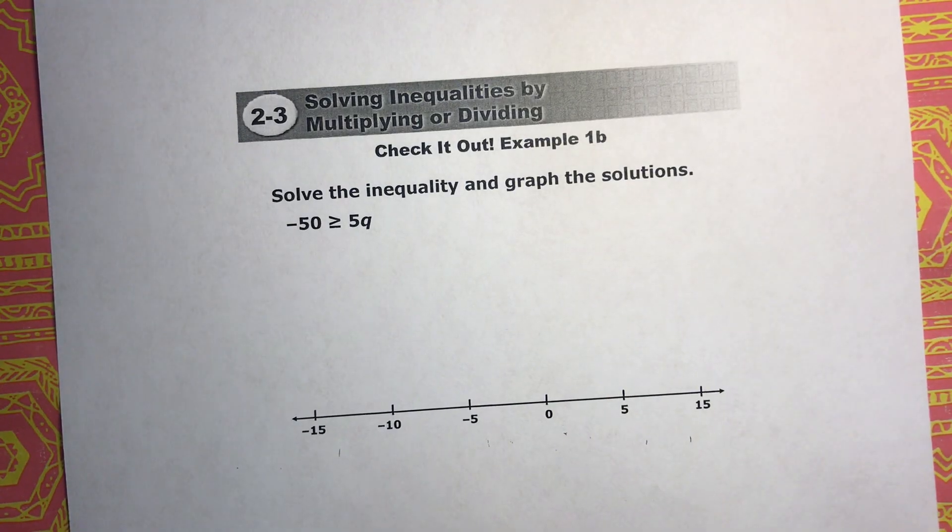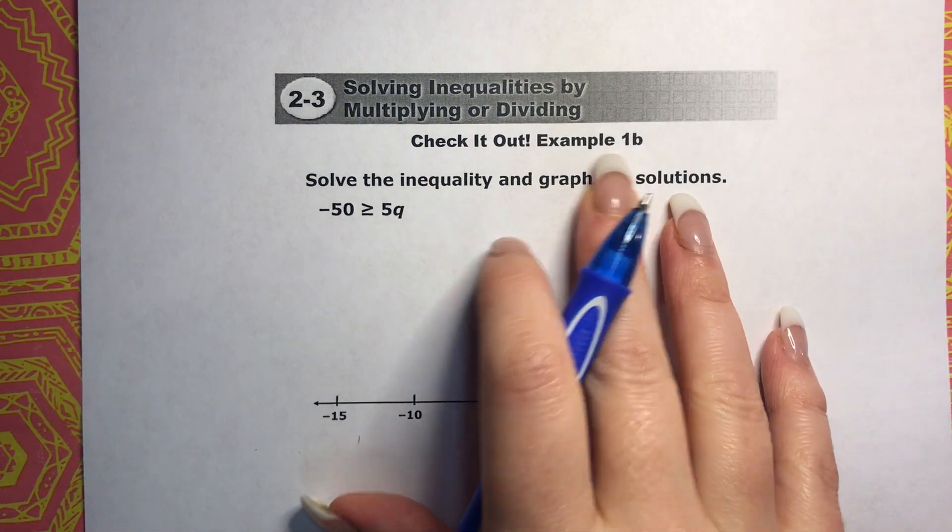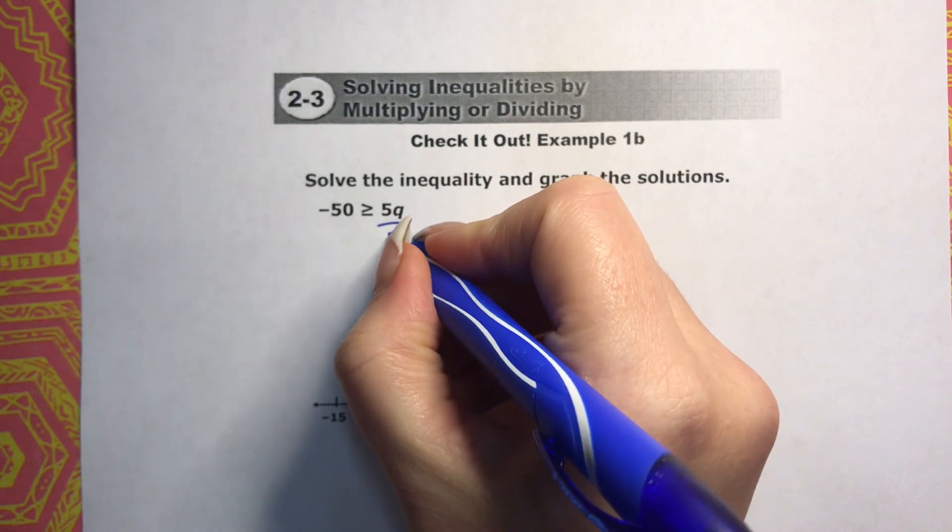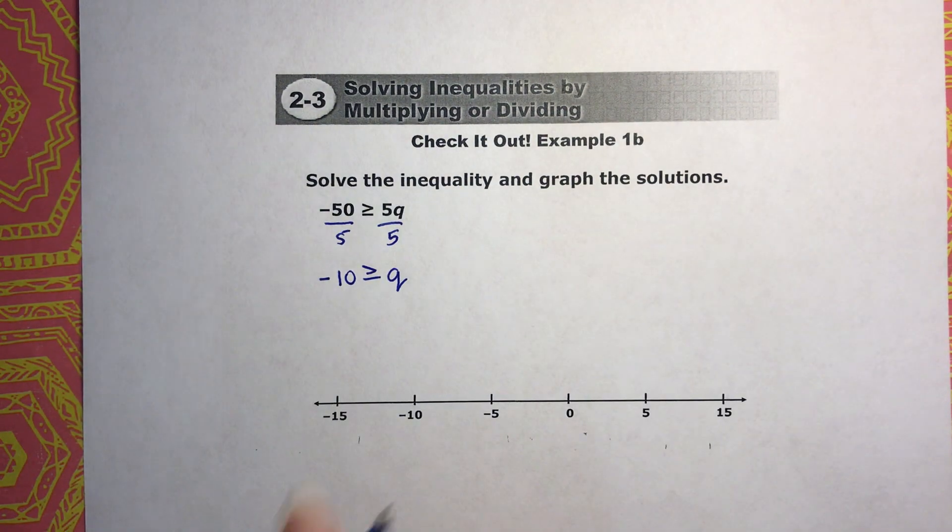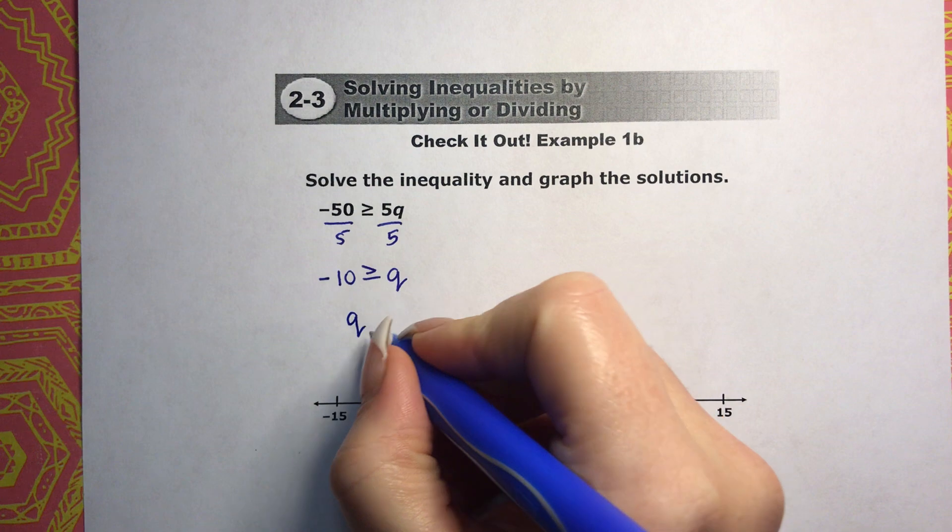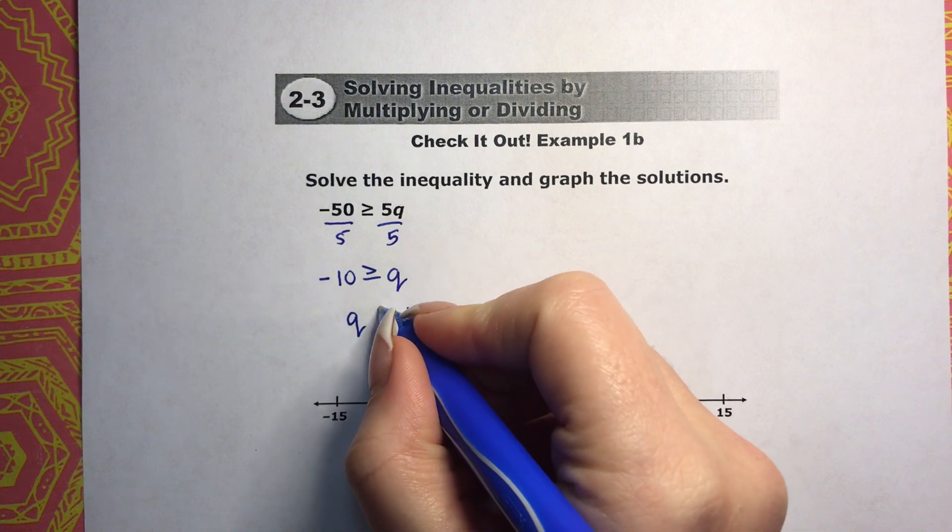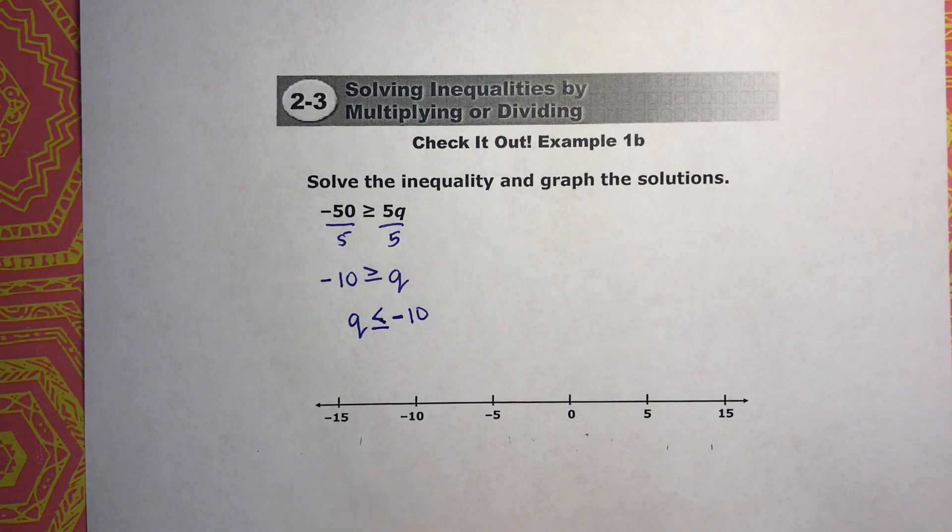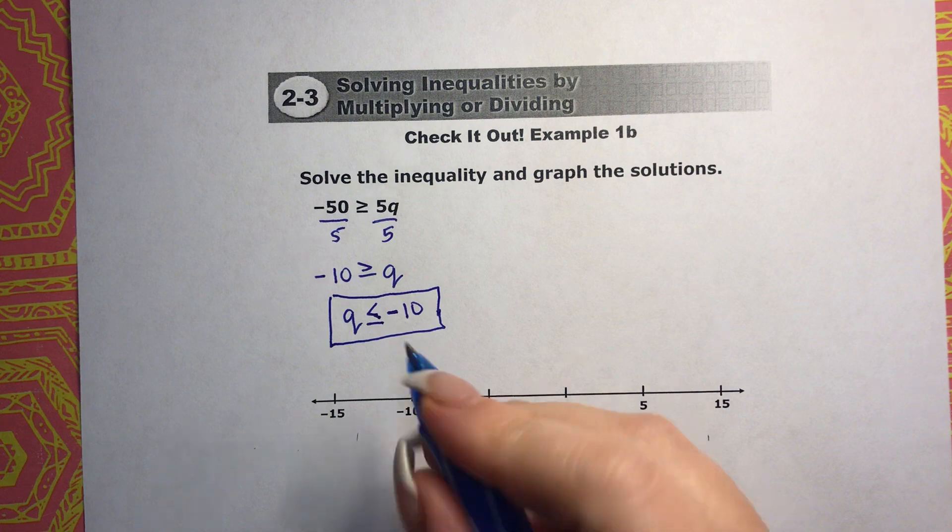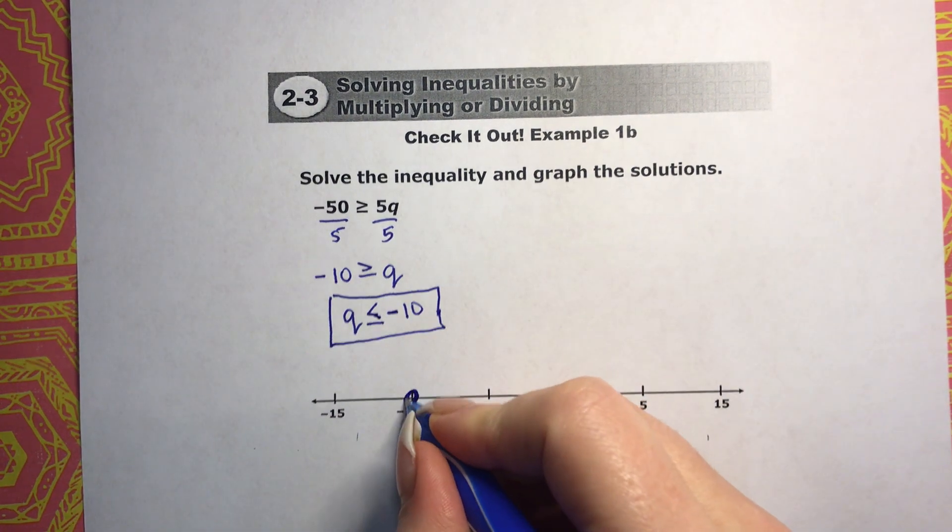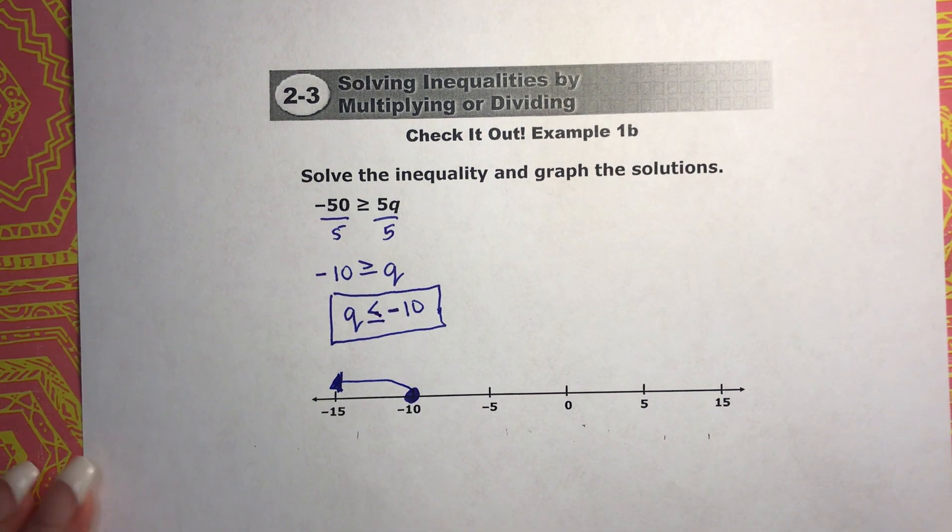Alright, we're back. Let's see how you did on, check it out, example 1B. So we're trying to solve for q. We need to divide both sides by 5. That ends up with negative 10 is greater than or equal to q. We have to make sure that q is on the left side. And right now, the alligator is facing the negative 10. So it needs to do the same here. So that is our answer. So if you got that right, and you have the variable on the left side with the correct sign, great job. Now we just need to graph it. This is going to be a closed circle. And q is less than, so it's everything this way. So if you got that one right, great job.